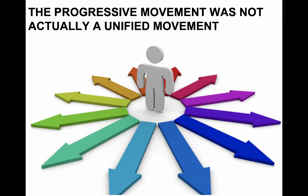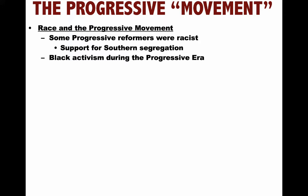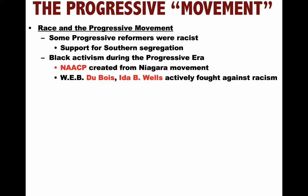A great but sad example of how the Progressive Movement was not on the same page can be seen when looking at its record on racial issues. Some Progressive Reformers were racist — they supported Southern segregation or ignored racism in the North. Woodrow Wilson, a famous Progressive President, resegregated the federal government workforce and gave two thumbs up to the super racist movie The Birth of a Nation — the one where the KKK are the heroes. Nevertheless, black activism during the Progressive Era was on the rise. The NAACP was created from the Niagara Movement, and individuals like W.E.B. Du Bois and Ida B. Wells actively fought against racism.